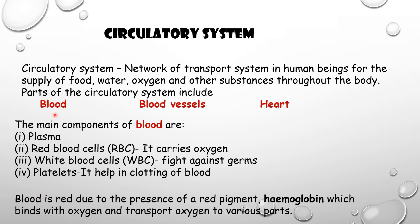So the main components of blood and their functions: plasma is the liquid part of blood. RBC carries oxygen. WBC fights against germs. Platelets help in clotting of blood. Blood is red due to the presence of a red pigment called hemoglobin, which binds with oxygen and transports oxygen to various parts of the body.